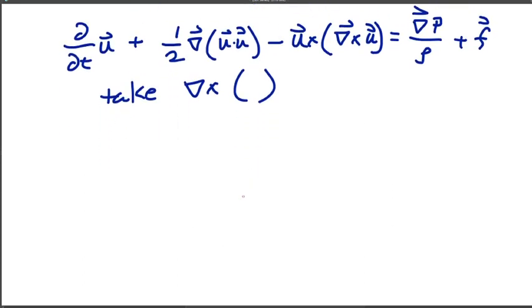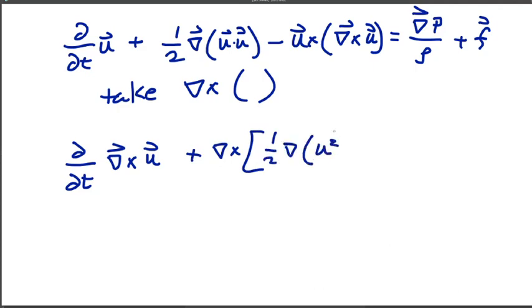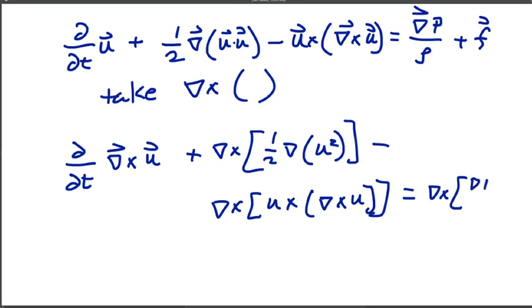And the curl is a spatial derivative. And so, in these sorts of systems, it is separable from the time derivative. It propagates through that. We can interchange the two. So this is d by dt of the curl of u. All right. And we also have the curl of quantity one half gradient of u squared. That's our contracted u on u. And then we've got the curl of quantity u cross curl cross u. And then we've got our right-hand side. We've got the curl of grad p over rho. And we've got our f vector.